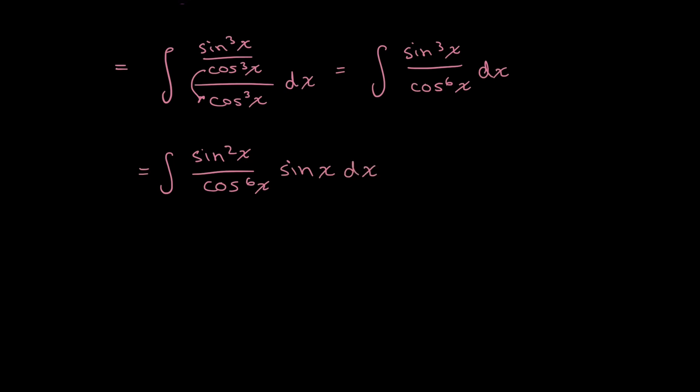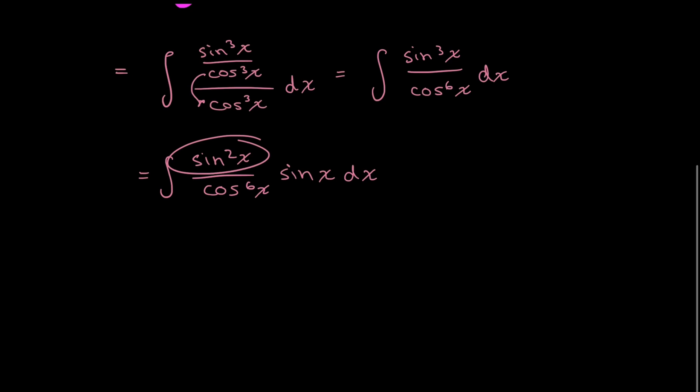And I want you to take note of that sine squared x that I have over here. This can be substituted. Take a minute to guess what it might be. And if you thought of the Pythagorean identity of sine squared x plus cosine squared x is equal to 1, then you'd be correct.